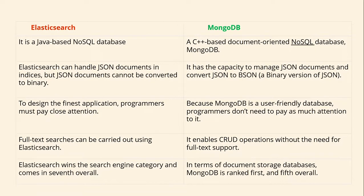Elasticsearch can handle JSON documents for indexing, but JSON documents cannot be converted to binary. In case of MongoDB, it can manage JSON documents and convert JSON to BSON, a binary version of JSON. To design the finest application with Elasticsearch, programmers must pay close attention. MongoDB, being a user-friendly database, does not require programmers to pay as much attention. Full-text search can be carried out using Elasticsearch, while MongoDB enables CRUD operations without full-text support. Elasticsearch wins the search engine category and has less latency, while MongoDB ranks first in the document-oriented database category.